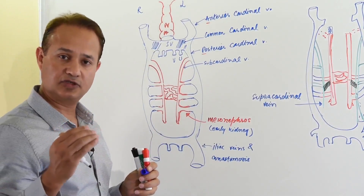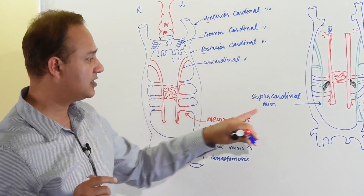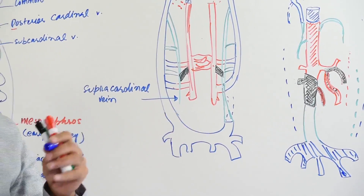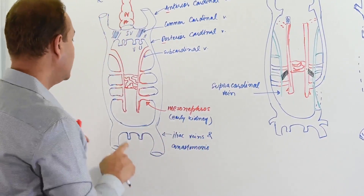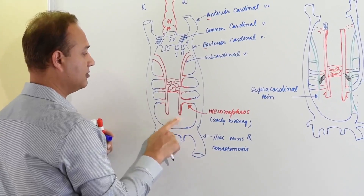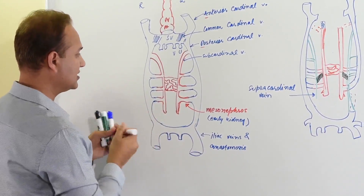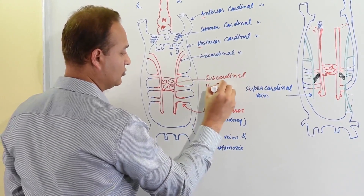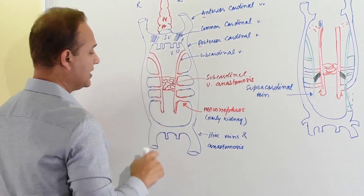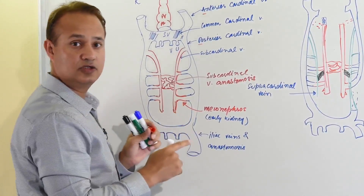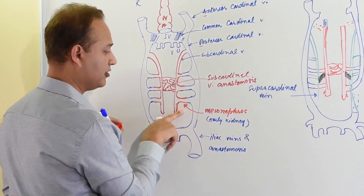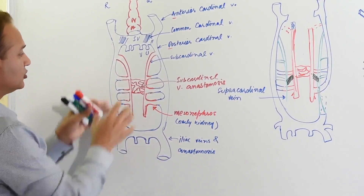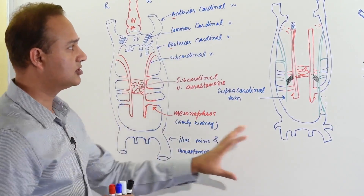There are three sets of veins: first, the anterior and posterior cardinals; second, the subcardinals; and third, the supracardinals — the green ones that develop a little later. These three sets contribute to the formation of the inferior vena cava. The subcardinal veins have an anastomosis in the center, and they connect to the posterior cardinal. Also important here is the mesonephros of the early kidney, because parts of it become part of the inferior vena cava.